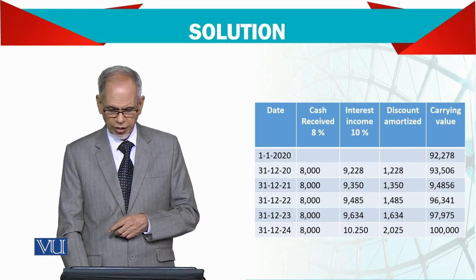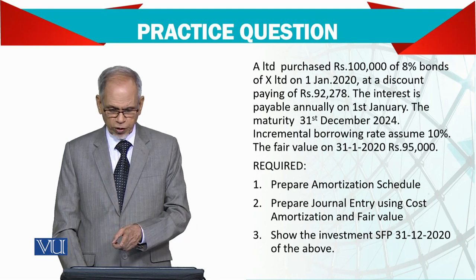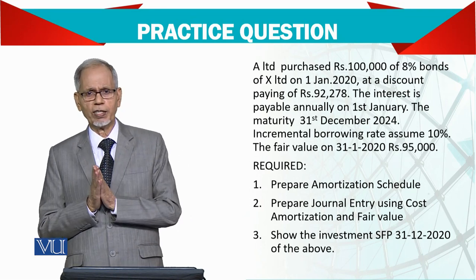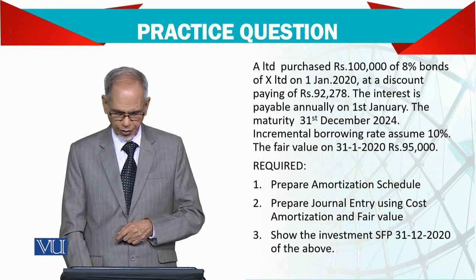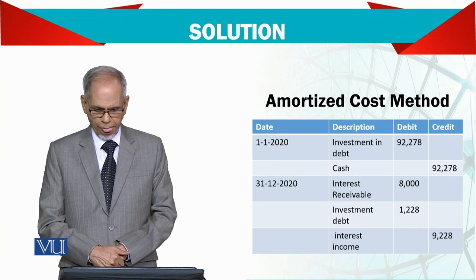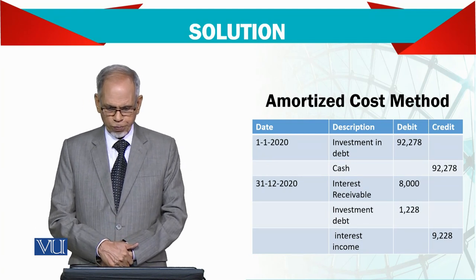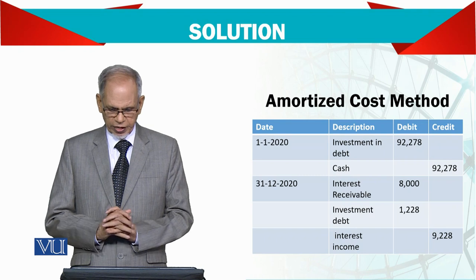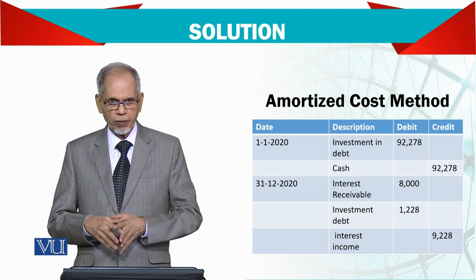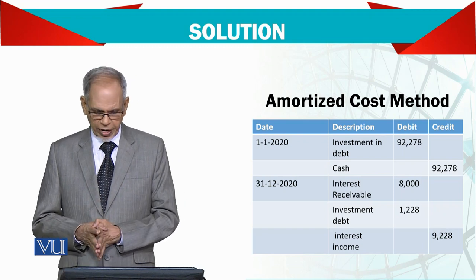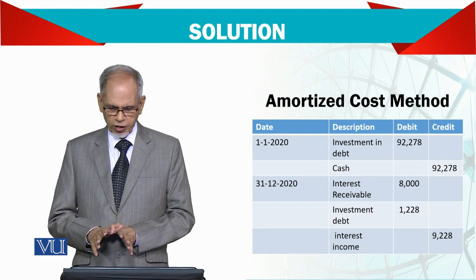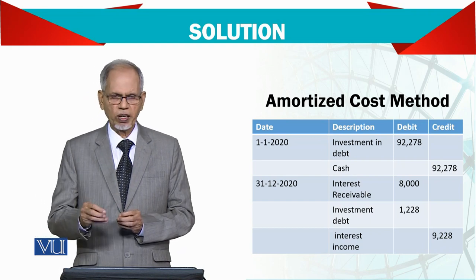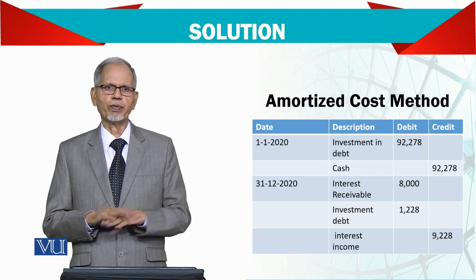Now the second requirement: prepare journal entries using both the cost amortization and fair value methods. Under the amortized cost method: debit investment and credit cash for the purchase. Then debit interest receivable 8,000 and debit investment for the differential, crediting interest income. Interest receivable will be received as cash in January. The investment balance moves up by the differential amount, and interest income goes to the income statement.